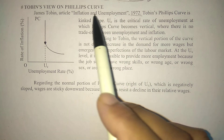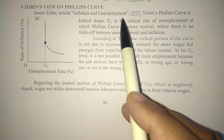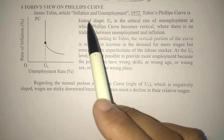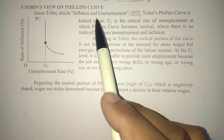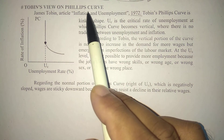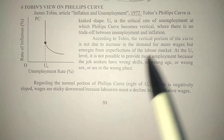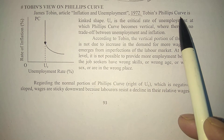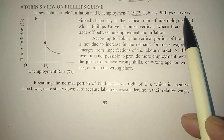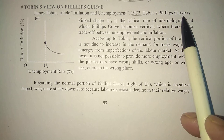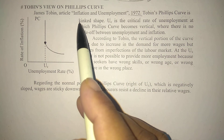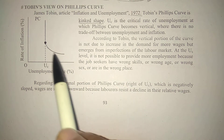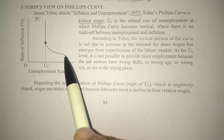James Tobin's article 'Inflation and Unemployment' published in 1972 argued that the Phillips curve can have a kink in it. Tobin's Phillips curve means the Phillips curve can be a pen — it has a kink where the slope changes.